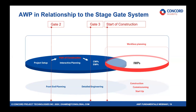Looking at the standard stage gate system — we start with a definition phase, sometimes called FEL2 or FEL1/2, then we move into the FEED phase — front-end engineering and design, also called FEL3 or stage three. The terminology isn't important as long as you associate the AWP components with the timeline of your project delivery system.